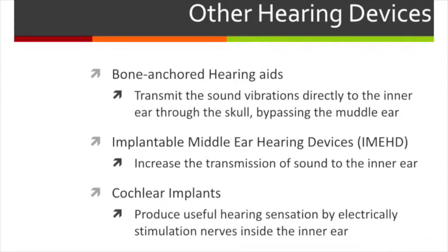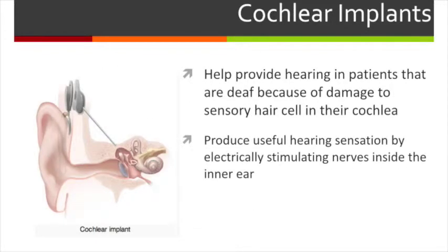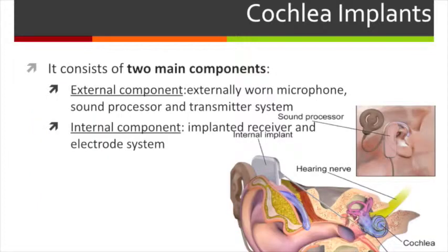There are also other hearing devices that help people with more special needs, such as bone-anchored hearing aids, implantable middle ear hearing devices, and cochlear implants. Cochlear implants provide hearing in patients who are deaf due to damage in the sensory hair cells in the cochlea. They produce useful hearing sensation by electrically stimulating a nerve inside the inner ear. The cochlear implant contains two main components: an external component — with a microphone, sound processor, and transmitter — which receives sound, converts it to digital signal, and transmits it to the internal component; and an internal implanted receiver and electrode system, which receives the signal and stimulates the auditory nerve.